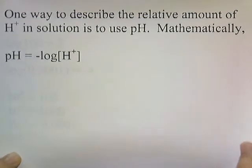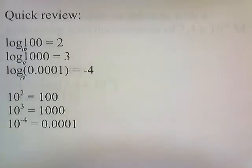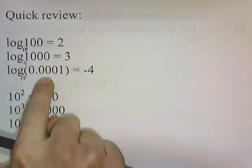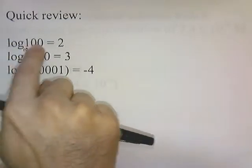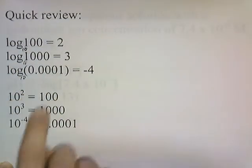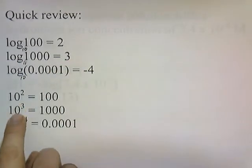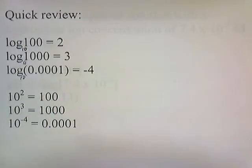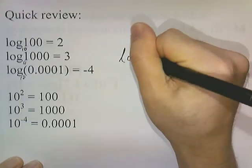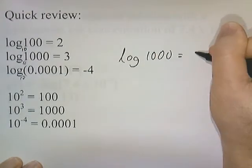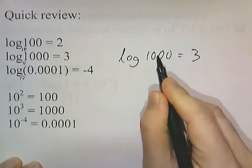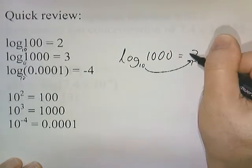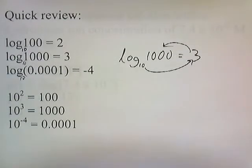Quick review of logarithms: log of 100 equals 2; log of 1,000 equals 3; log of 0.0001 equals −4. Log of 100 equals 2 because 10² equals 100. Log of 1,000 equals 3 because 10³ equals 1,000. Log of 0.0001 equals −4 because 10⁻⁴ equals 0.0001. Logarithms work as: 10 raised to this power equals this number.